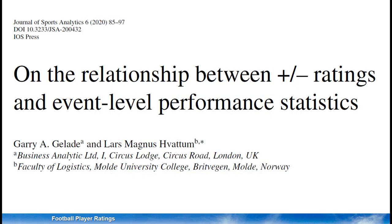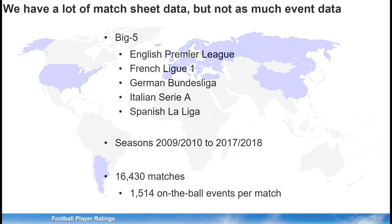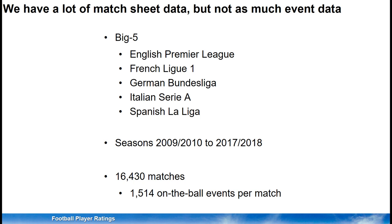The main gist of the paper is that we want to see whether there is a connection between the actions a player takes and the plus-minus rating that player obtains. When calculating plus-minus ratings we have access to a very large dataset; however, for event data our access was limited. We used everything we had, covering eight seasons from the Big Five Leagues.